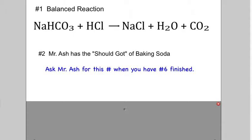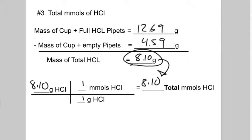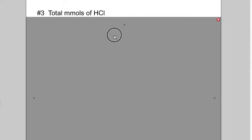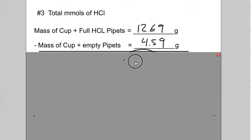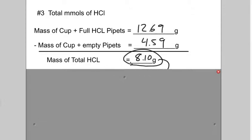So let's go through some example numbers. Just focus on this part. So let's say we mass our cups. These numbers are similar to the video. We had to adjust one because I actually didn't add enough HCl too. So just go with these numbers. So we massed the cups plus HCl. And then when we emptied them out, we had 4.59. So our total HCl was 8.1 grams.